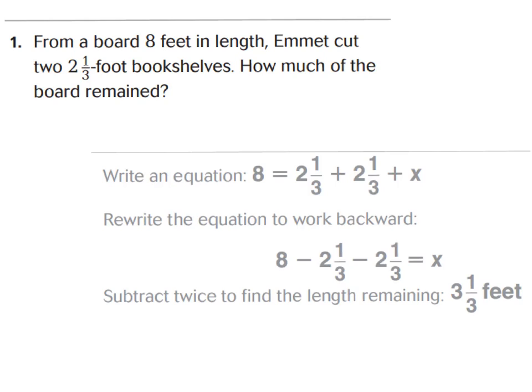There are two strategies you can use. One: start with your whole and subtract one group, then subtract the other group to get your value — that's the way the book shows. But another strategy, which I find easier, is to combine the two groups of two and one-third to get a total of four and two-thirds, and just subtract that from eight. To me, that would be a lot easier.